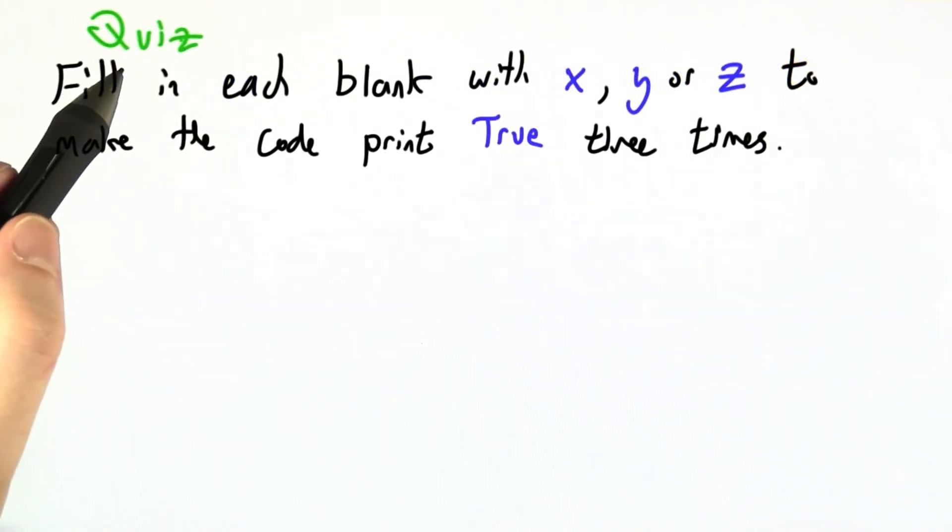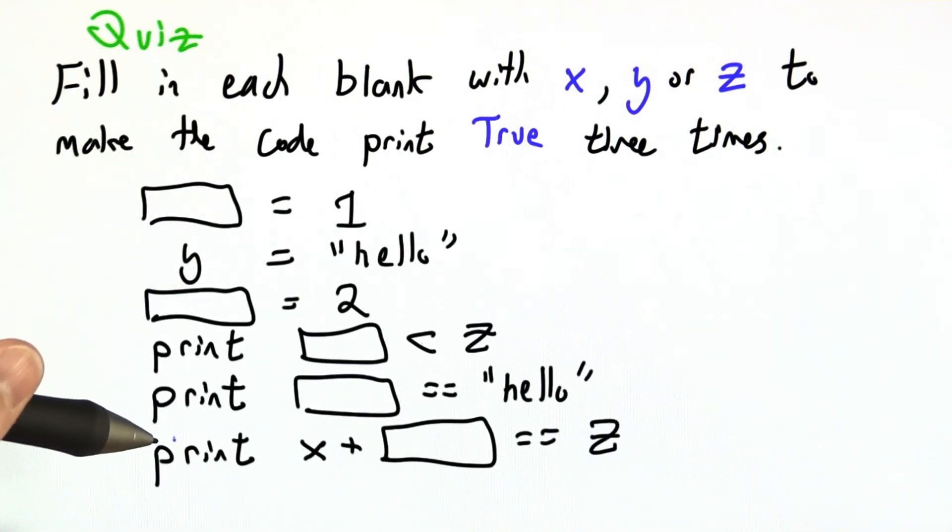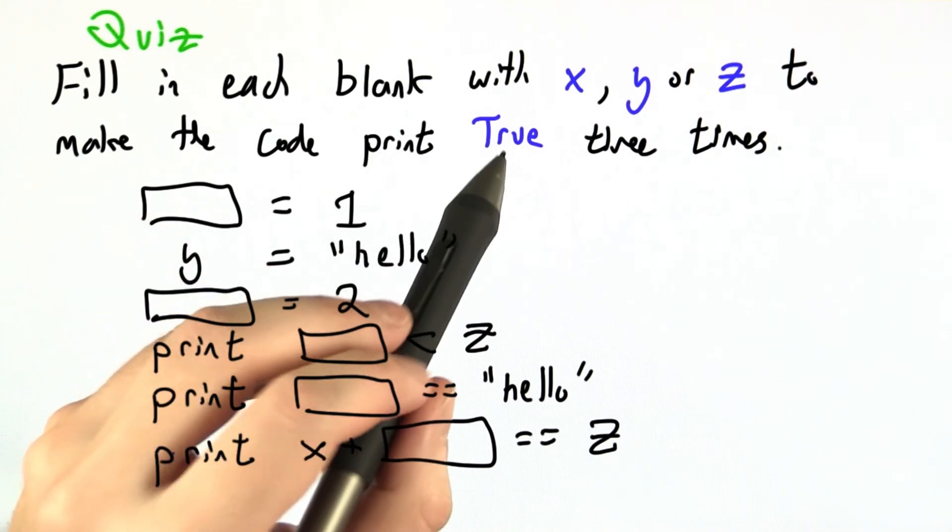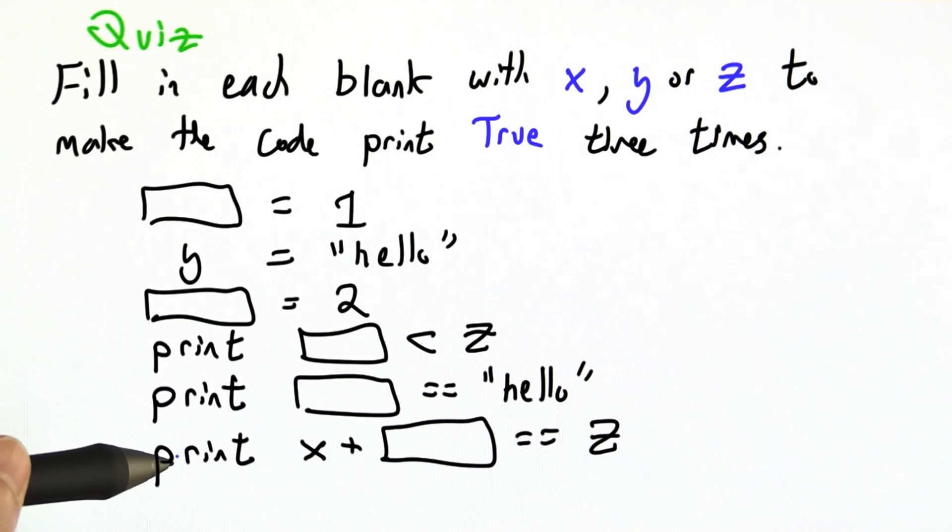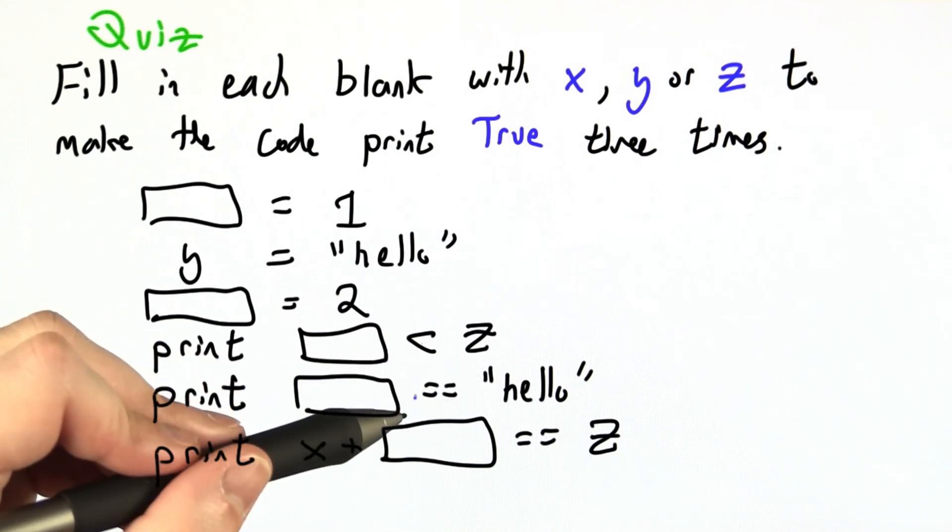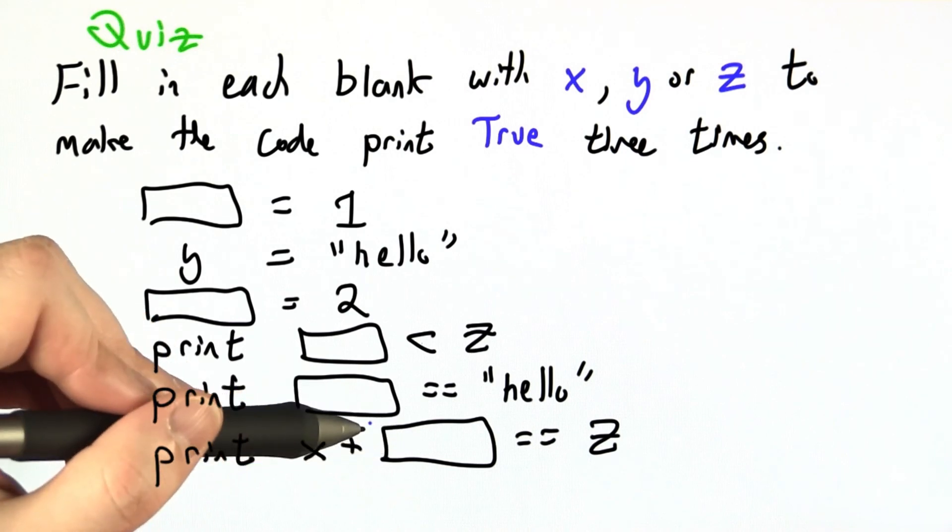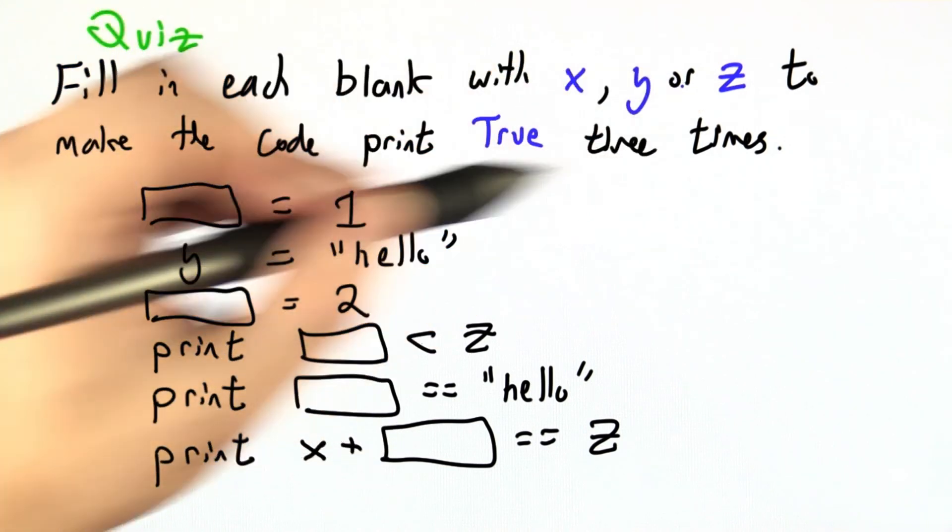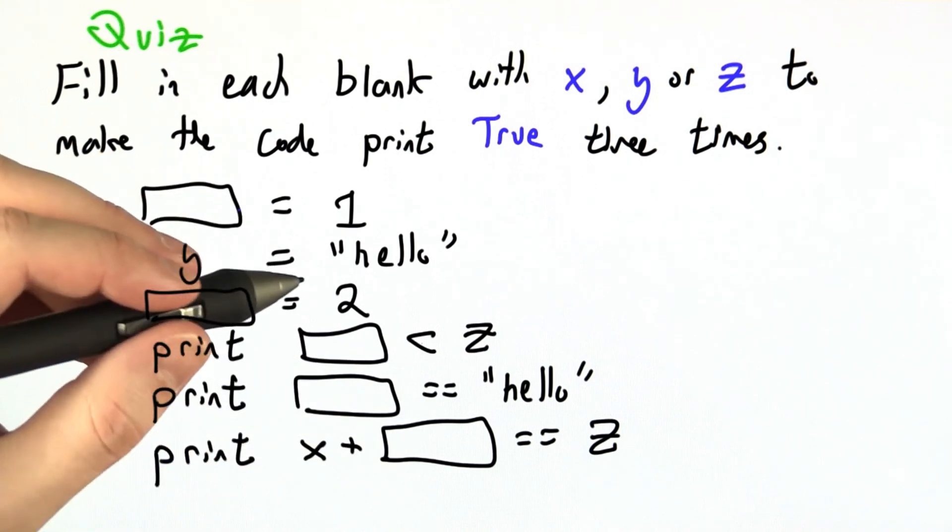Let's just briefly review evaluating expressions in context in the form of a quiz. I've written a six-line Python program and I would really like it to print out true three times. So each of these print statements should have its argument evaluate to true. What I'd like you to do is fill in each blank so that that happens, but you can only fill in blanks with x, y, or z. This is kind of a puzzle. Can you solve constraints or do backwards reasoning to figure out how things would have to go?